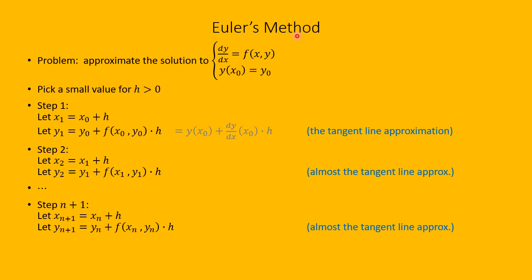Now let's describe Euler's method. We want to approximate the solution to an initial value problem of the form: the derivative of y with respect to x equals f of x, y, with y of x-naught equals y-naught. For Euler's method, we'll start by picking a small positive value for h.